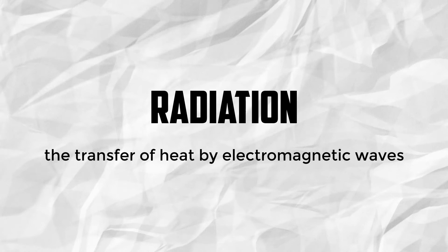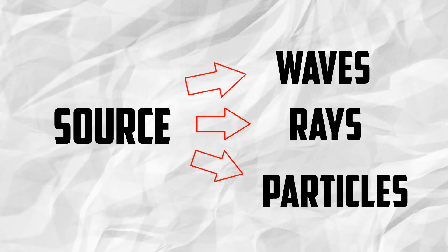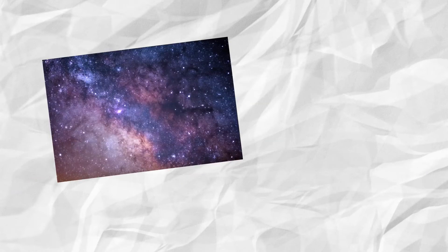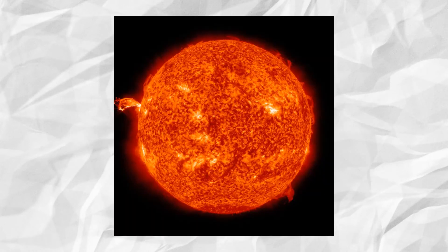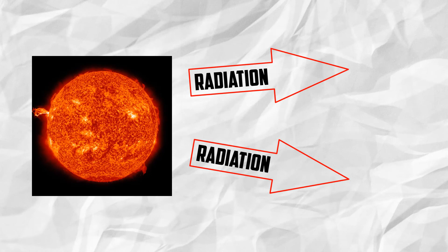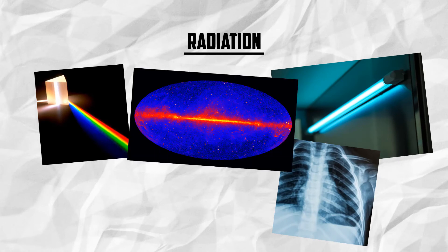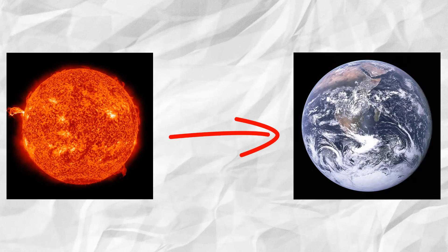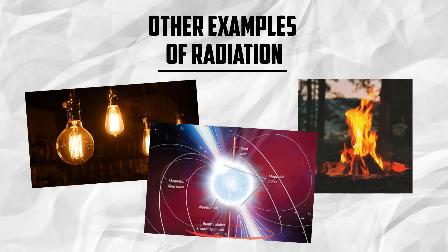Radiation is the transfer of heat by electromagnetic waves. It happens when the source emits energy in the form of waves, rays, or particles. Unlike conduction and convection, radiation does not need any materials to travel — it travels through space at the speed of light and may even penetrate certain materials. An example of radiation is the sun. The sun emits electromagnetic radiation in many different kinds, such as visible light, UV rays, X-rays, gamma rays, and infrared rays, all of which can be found in the electromagnetic spectrum. Some of this solar radiation is absorbed, scattered, and reflected by the Earth's atmosphere, which heats up the stratosphere. Other examples of radiation include light bulbs, fires, pulsars, and microwaves.